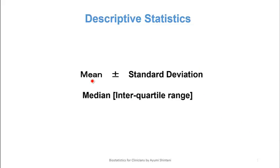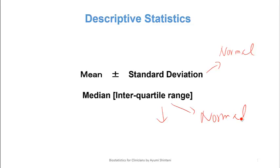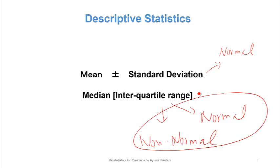In this video, we learned about mean and standard deviation, and median and interquartile range. Mean and standard deviation can only be used for normally distributed data. Median and interquartile range, however, can be used for both normal and non-normal data. So if you don't want to worry about which to use, you might just use median and interquartile range for everything in your paper — and that's perfectly fine. Thank you.